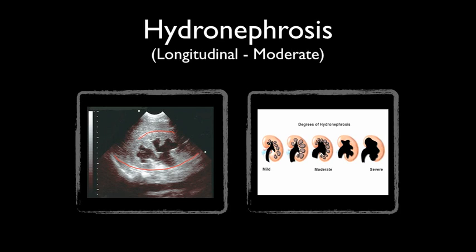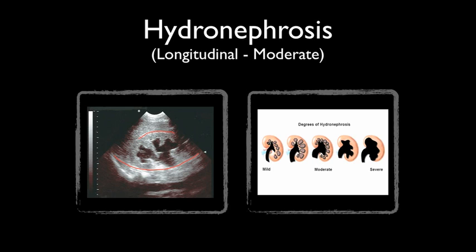Here's an example of moderate hydronephrosis. Recognize how much more pronounced the dilated calyces have become. This is an example of severe hydronephrosis. Note that the shape of the kidney is completely obliterated.